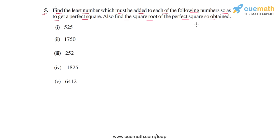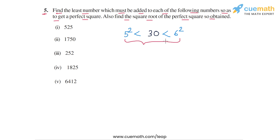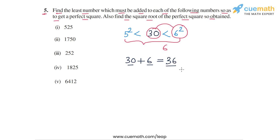In each case, we will find those two consecutive perfect squares between which the given number lies. For example, take the number 30. The largest perfect square smaller than 30 is 5 squared, because 5² = 25, which is less than 30. And the smallest perfect square larger than 30 is 6 squared, because 6² = 36, which is greater than 30. So 30 lies between the consecutive perfect squares 5² and 6². Just find the difference between 30 and the next perfect square after 30: 36 − 30 = 6. So if you add 6 to 30, you get 36, which is a perfect square.